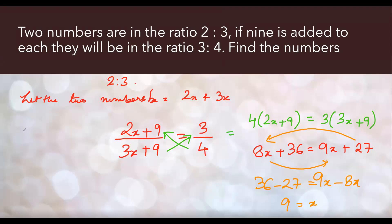When you subtract, we have x equals 9. Now x is not our answer children. We have to actually find out the numbers. So numbers were 2x which means 2 into 9, which is 18 is the first number. Other number was 3x which means 3 into 9 which is 27. So the two numbers are 18 and 27. I hope you have understood this question.